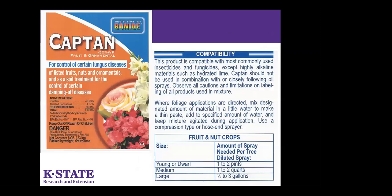If there's a compatibility issue, some products cannot be mixed with other products without problems. Captan is a fungicide that a lot of people use on their fruits, nuts, and ornamentals, and it doesn't like alkaline water or lime. You have to read the label, make sure you understand all sections and how to properly use the product. These people spent $200 million bringing this product to market — they want you to use it safely and to be happy with its performance.